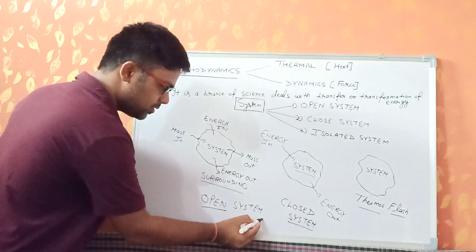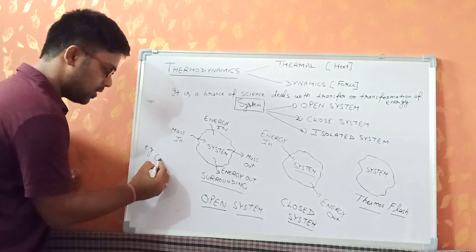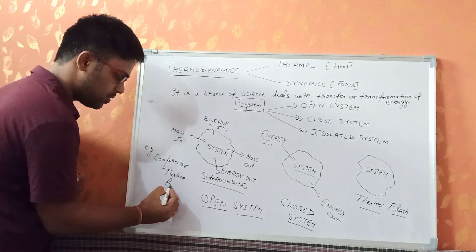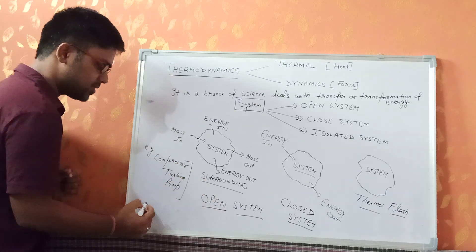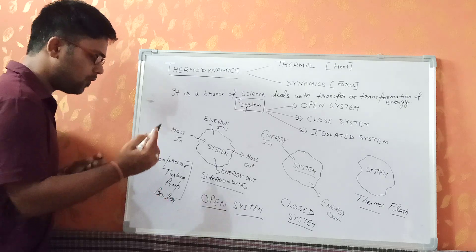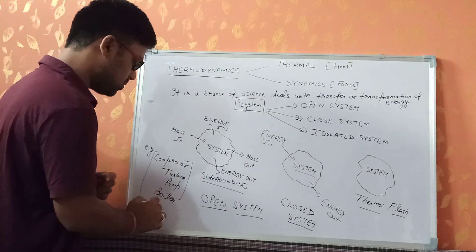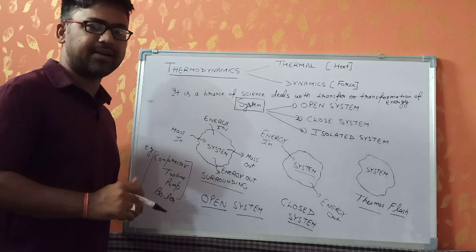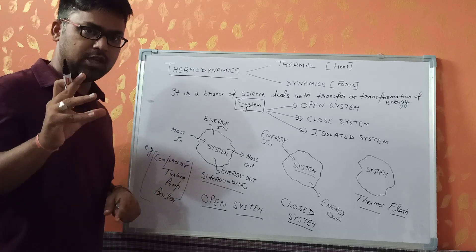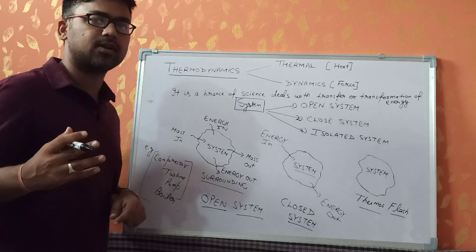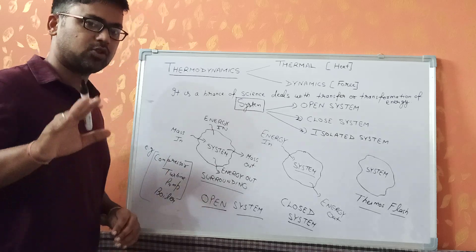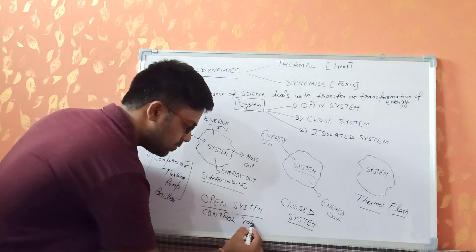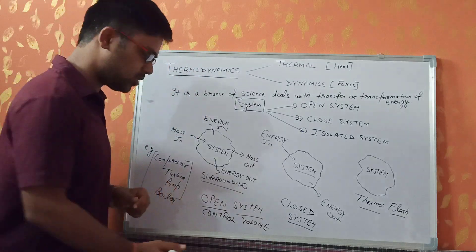For open systems, mechanical examples include a compressor, a turbine, a pump, and a boiler — all of these are part of open systems. In all these systems, both mass and energy can be exchanged between the system and the surrounding. One thing that remains constant is the volume — the size of the boiler, pump, turbine, or compressor remains constant. Therefore, open systems are also known as control volume systems.